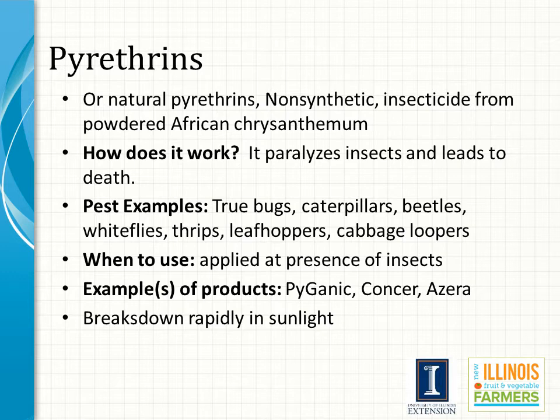Pyrethrin, or natural pyrethrins, is a non-synthetic insecticide produced from powdered African chrysanthemums, among other species. The insecticide paralyzes insects, which eventually leads to death. It works on pests such as true bugs, caterpillars, beetles, whiteflies, leafhoppers, and cabbage loopers. It must be applied at the presence of the insect, as it needs to have direct contact. Some examples of pyrethrins include Pyganic, Concern, and Azera. One important note is that pyrethrins break down rapidly in the sunlight, and their efficacy may be limited based on this.